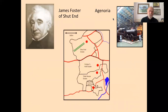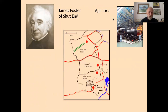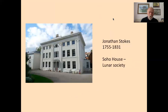The Shut End estate was owned by John Foley. In 1822 it was occupied by Thomas Dudley of the ironmasters of Tipton, and it was still very much a rural estate. By 1840 it was owned by James Foster the industrialist, the ironmaster, perhaps best known for championing the King Swinford railway and for the Agenoria — the engine that ran along it and can still be seen in the National Railway Museum. He was one of the early industrial pioneers of the area.